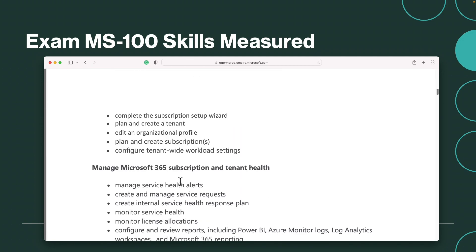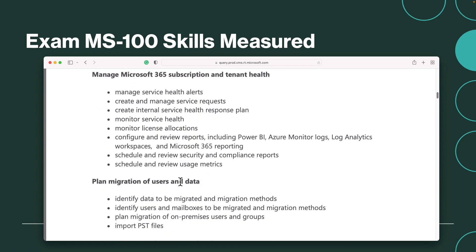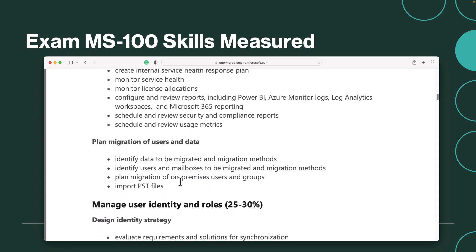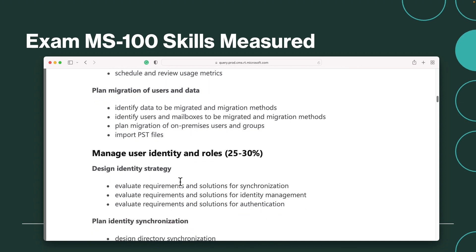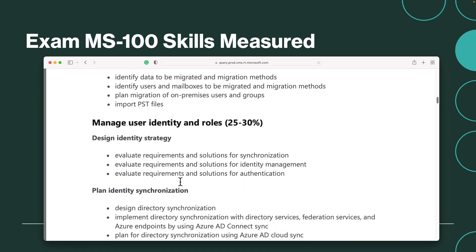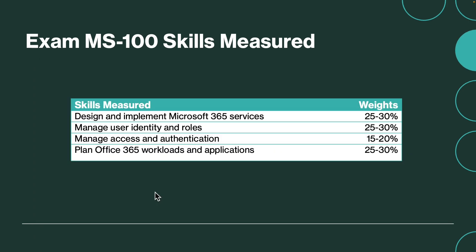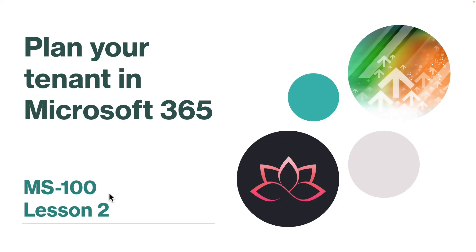I have broken down all of these topics into different lessons, so you can take your time to go through them one by one. If you are familiar with any particular topic you can skip that lesson and move on to the next one. After completing the MS100 course I will create MS101 as well, so you will be able to become the Microsoft 365 Enterprise Administrator. That concludes the first lesson. Next lesson we are going to learn about how you can plan your tenant in Microsoft 365. I will see you on the next one — until then, take care.